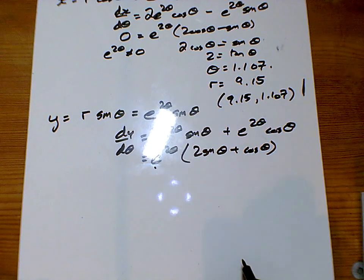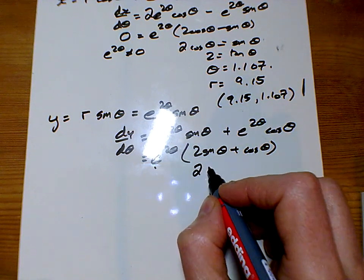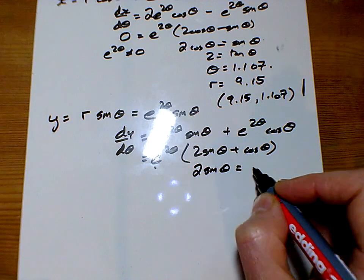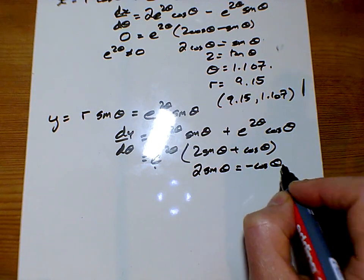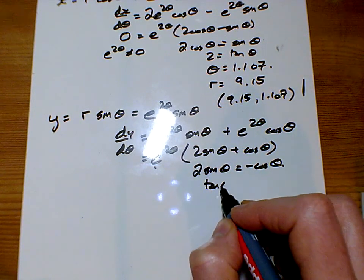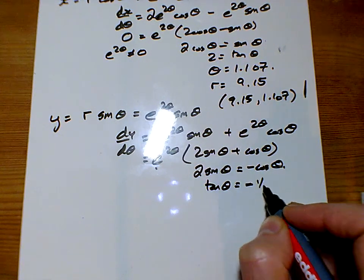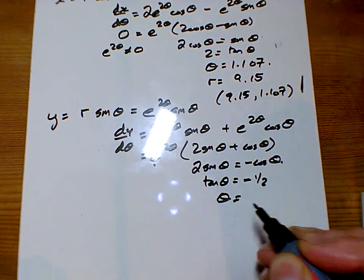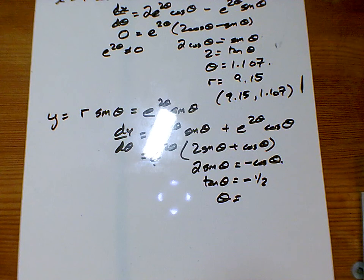Of course, that doesn't equal zero again. So we've just got 2 sine theta equals minus cos theta. And so tan theta equals minus a half.